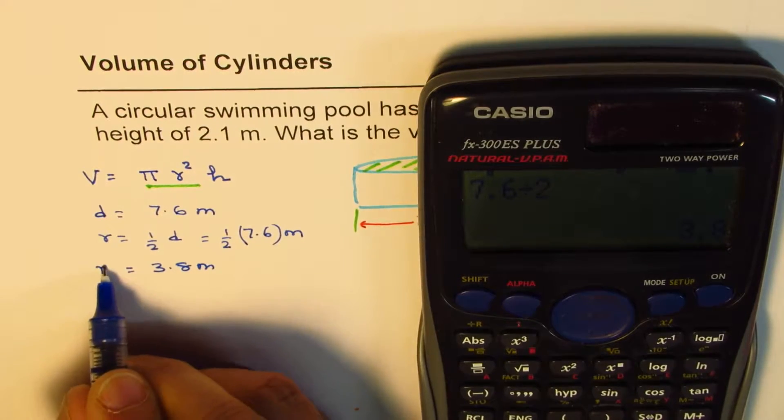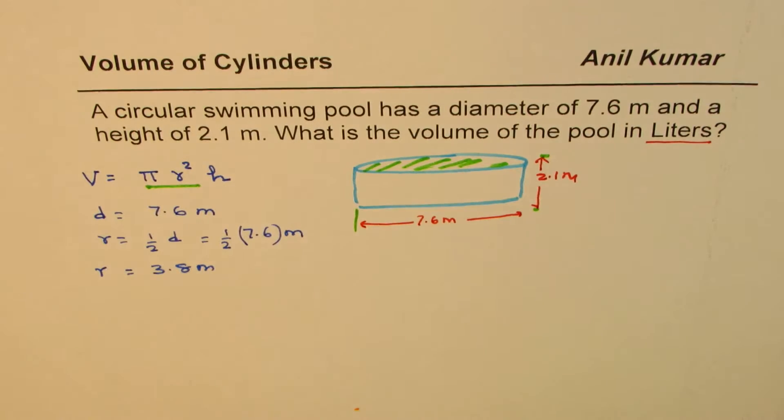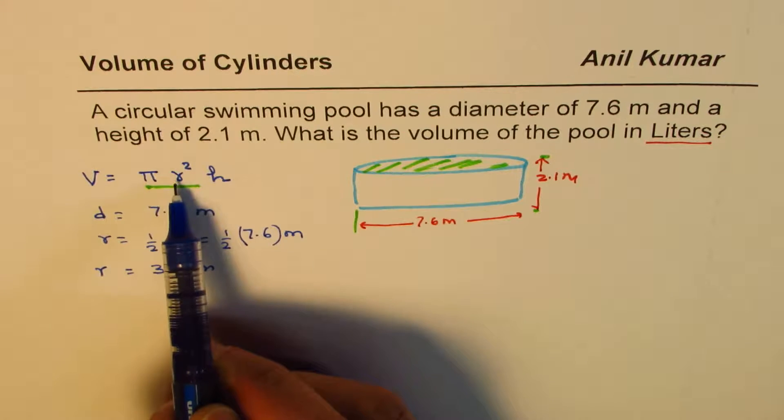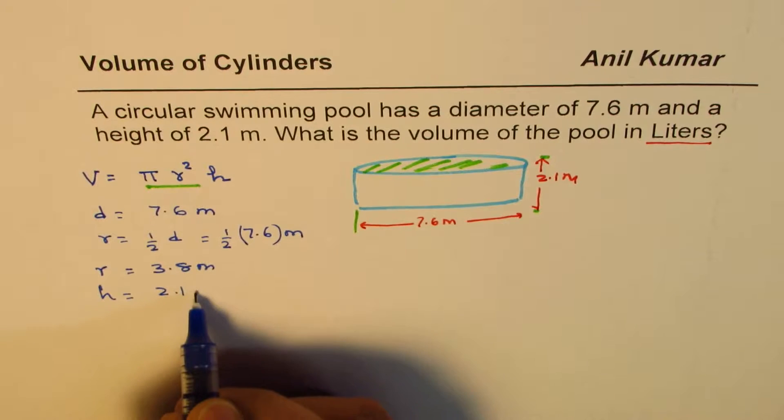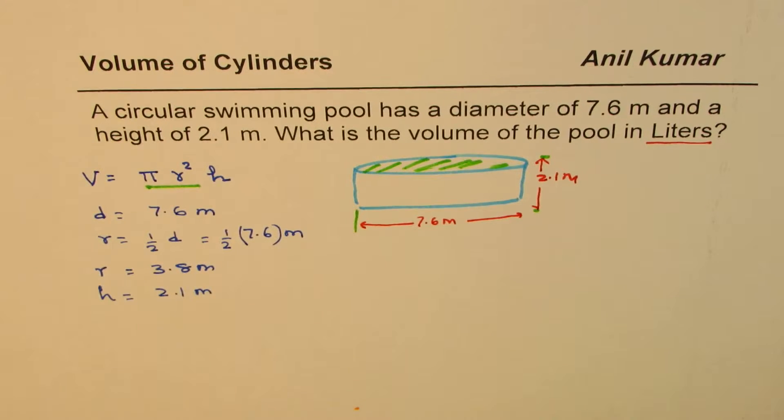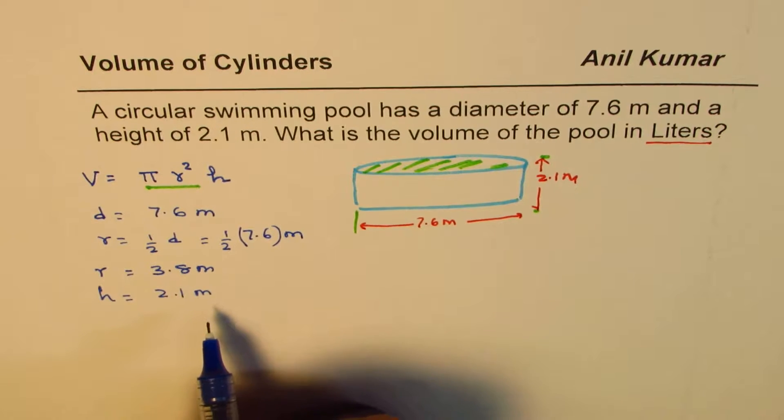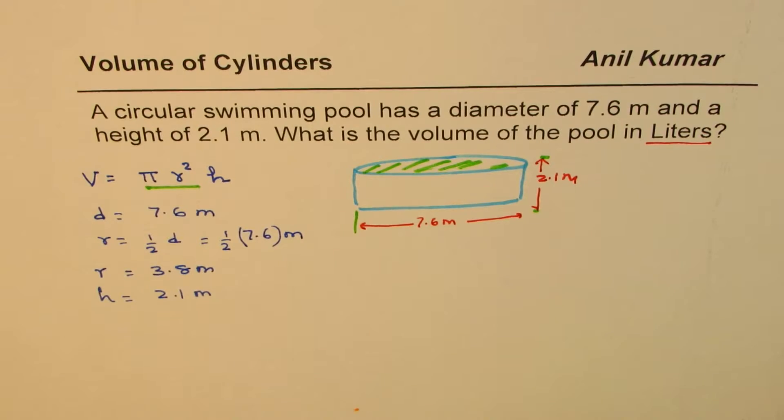So that is the radius for us. Now in this formula we know everything: we know π, we know r, and we know height. Height is given to us as 2.1 meters. So we have all the things known to us. We can now find the volume.